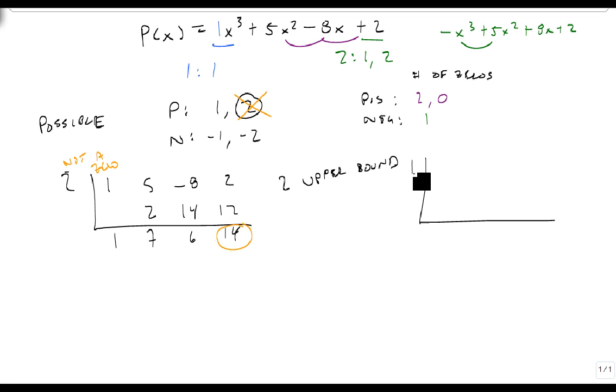Well, since 2 doesn't work, then maybe 1 does. So 1, 5, minus 8, 2. Bring down the 1, that's a 6, that's a minus 2, this is a minus 2, and there's our 0. So that means x equals 1 is a zero, and we have a factor of x minus 1.